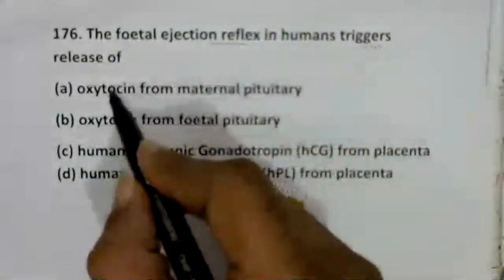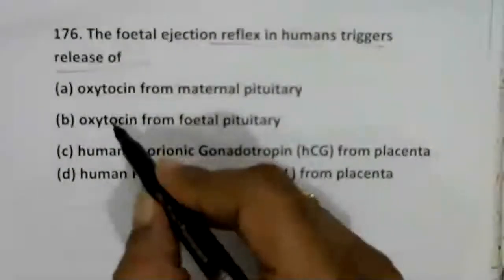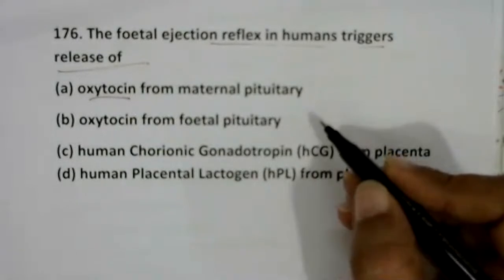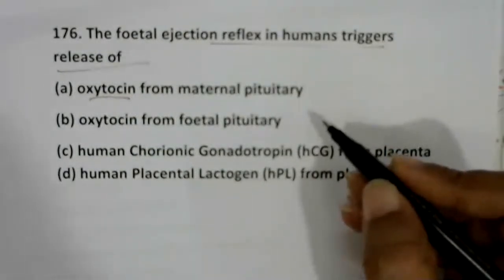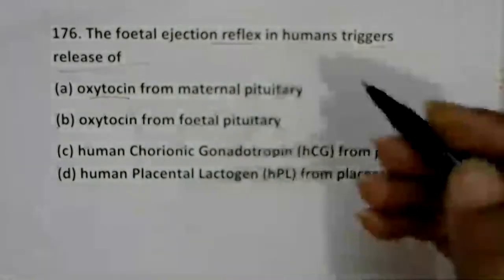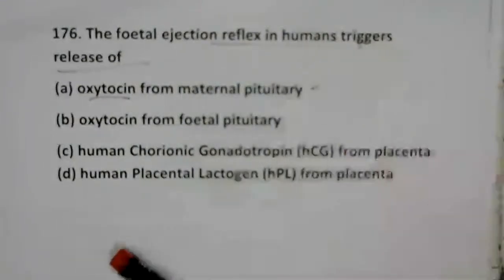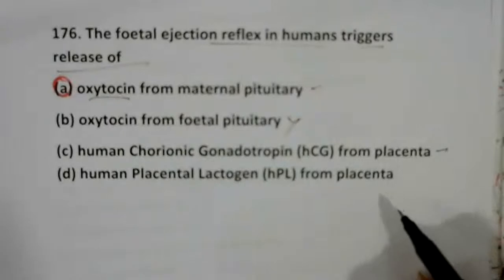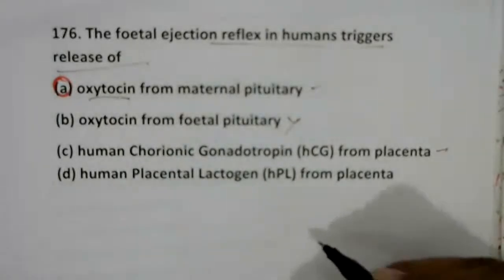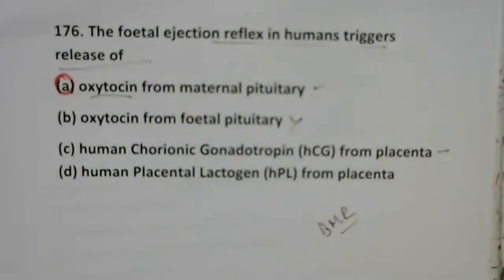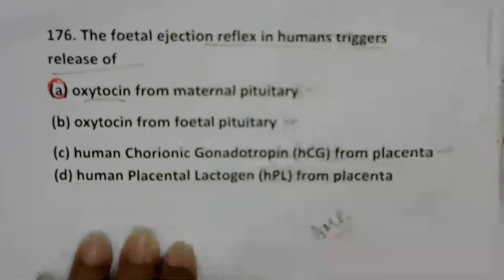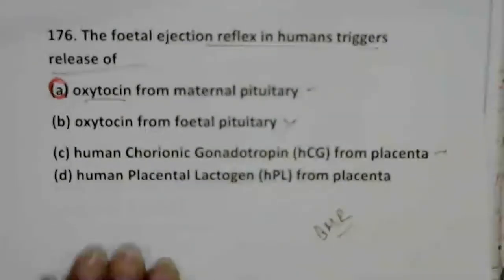The fetal ejection reflex in humans triggers the release of oxytocin. Oxytocin is secreted by the maternal pituitary and induces expansion of the pubic symphysis of the pelvic girdle and cervix region, inducing the fetal ejection reflex. The second option about oxytocin from fetal pituitary is wrong. hCG from the placenta plays a vital role in maintaining basal metabolic rate of the mother.